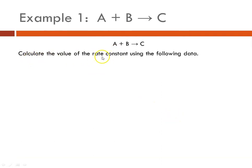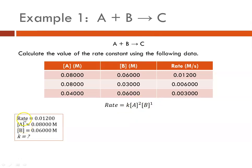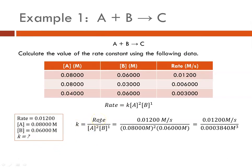Now we calculate the value of the rate constant using that data. Our rate law is: rate equals K times A to the second power times B to the first power. Rearranging, K equals rate divided by the concentration of A squared times the concentration of B to the first power. Plugging in the values from the first experiment, you'll notice we have molarity cubed in the denominator and molarity to the first power in the numerator. Our K turns out to be 31.25 molarity to the minus 2 seconds to the minus 1.